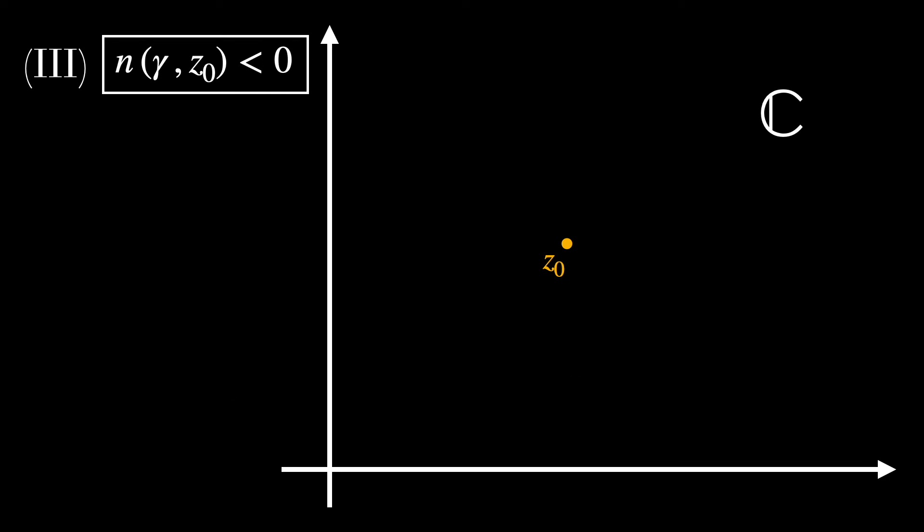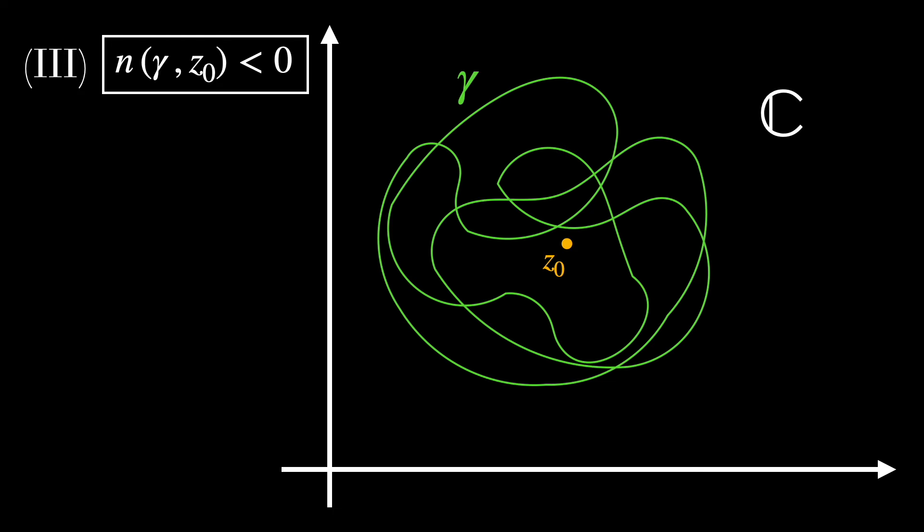The third example, when the winding number is negative. In this case here, if we do the same thing as before and we count each one of the crossings, we're going to find plus one minus one minus one.